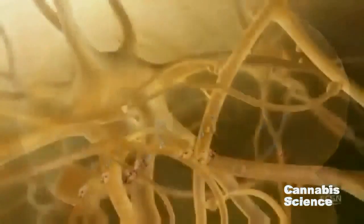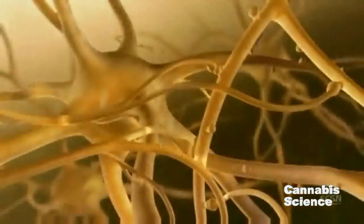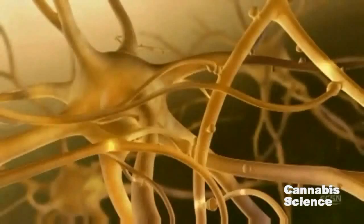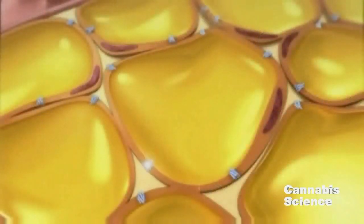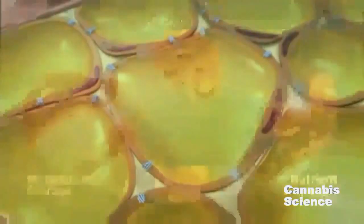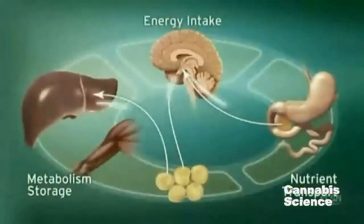In addition to acting as neural messengers, endocannabinoids mediate paracrine and autocrine signaling in adipocytes, hepatocytes and other cells.